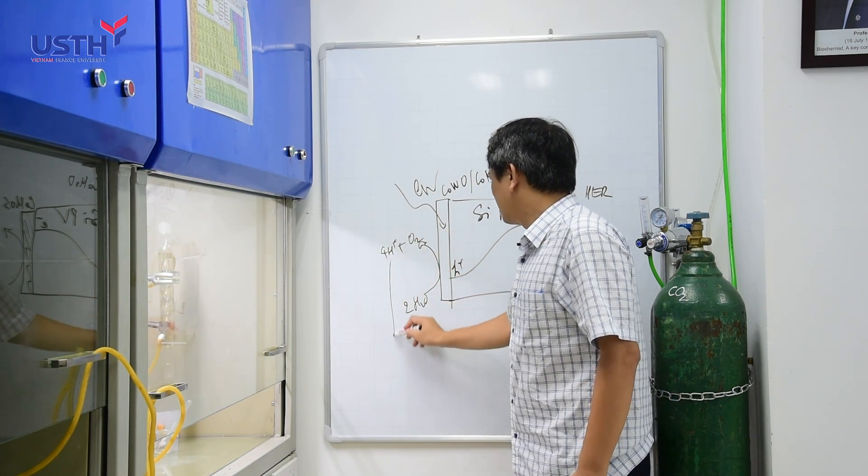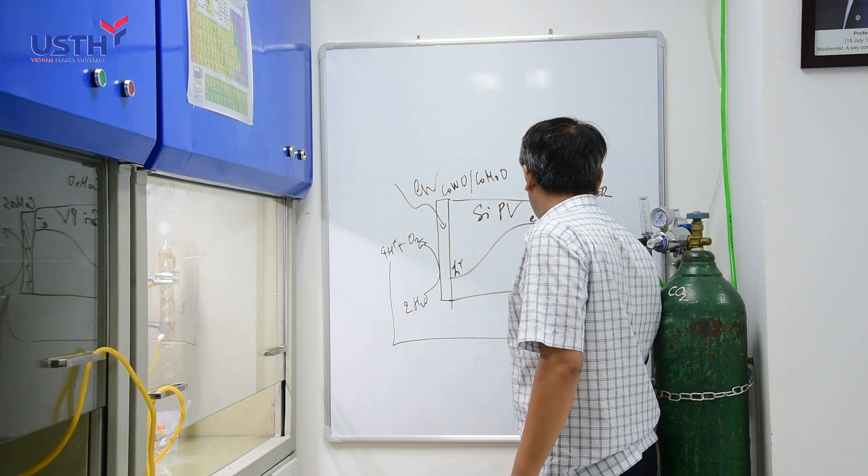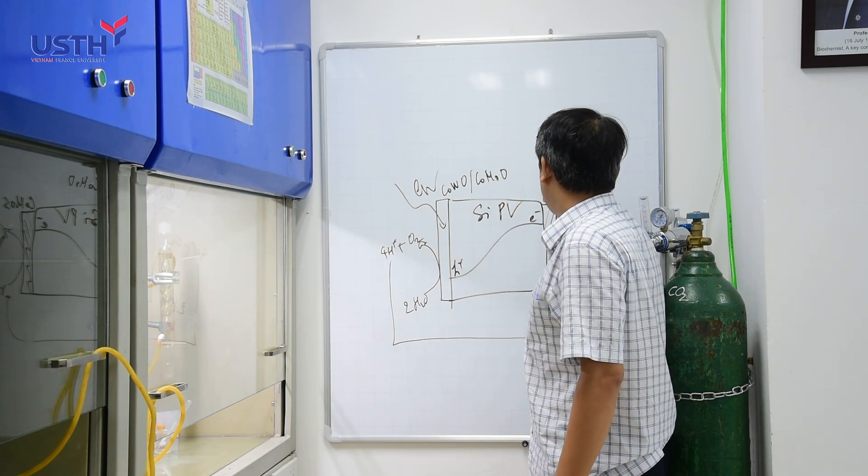So, by this way, the proton will run through the system and then reduce to make hydrogen.